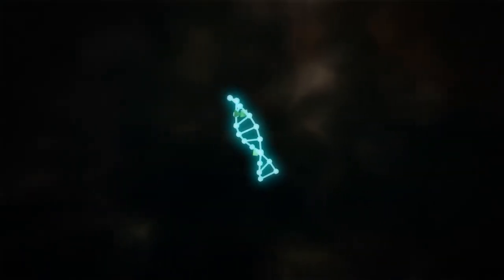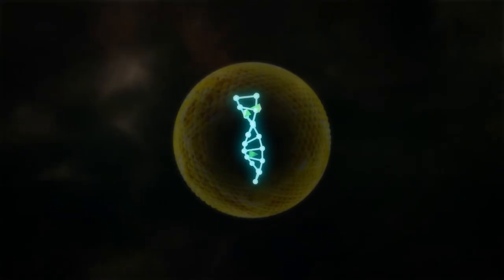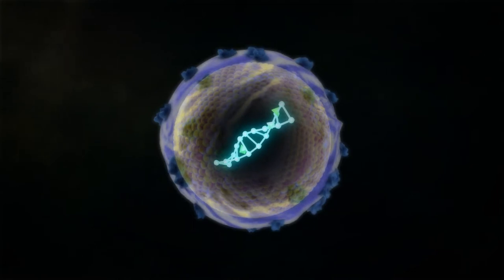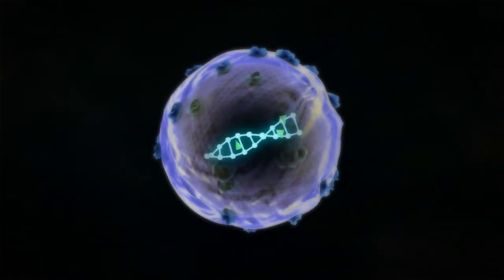To make such an artificial delivery system, first, a vesicle is created around the gene. Then we add a protein, making it able to home to the target cells.